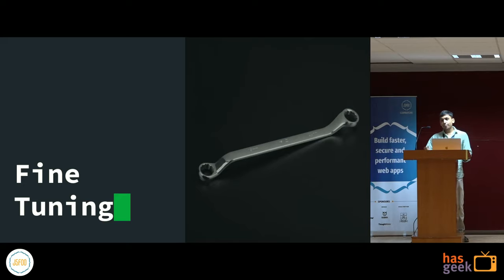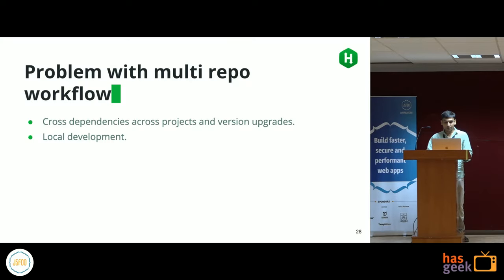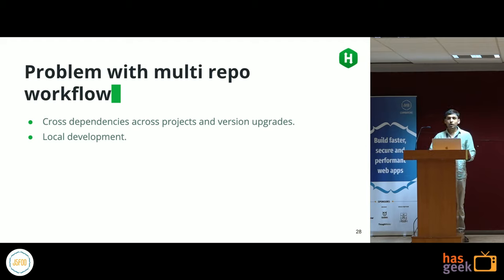While multi-repo architecture is working very well for us, there were a few hiccups. Two main ones: how to manage cross-dependencies across projects and how to do version upgrades across all modules and apps; and second, how to maintain the same level of productivity we had with the monolithic single-repo architecture, specifically around local development.